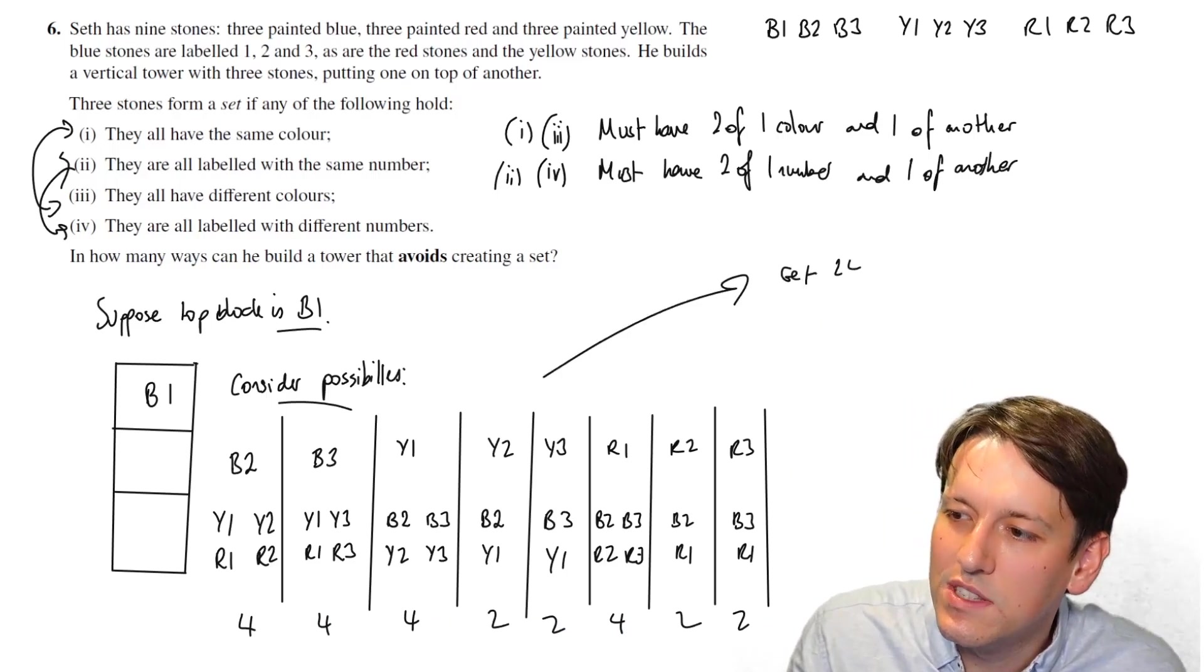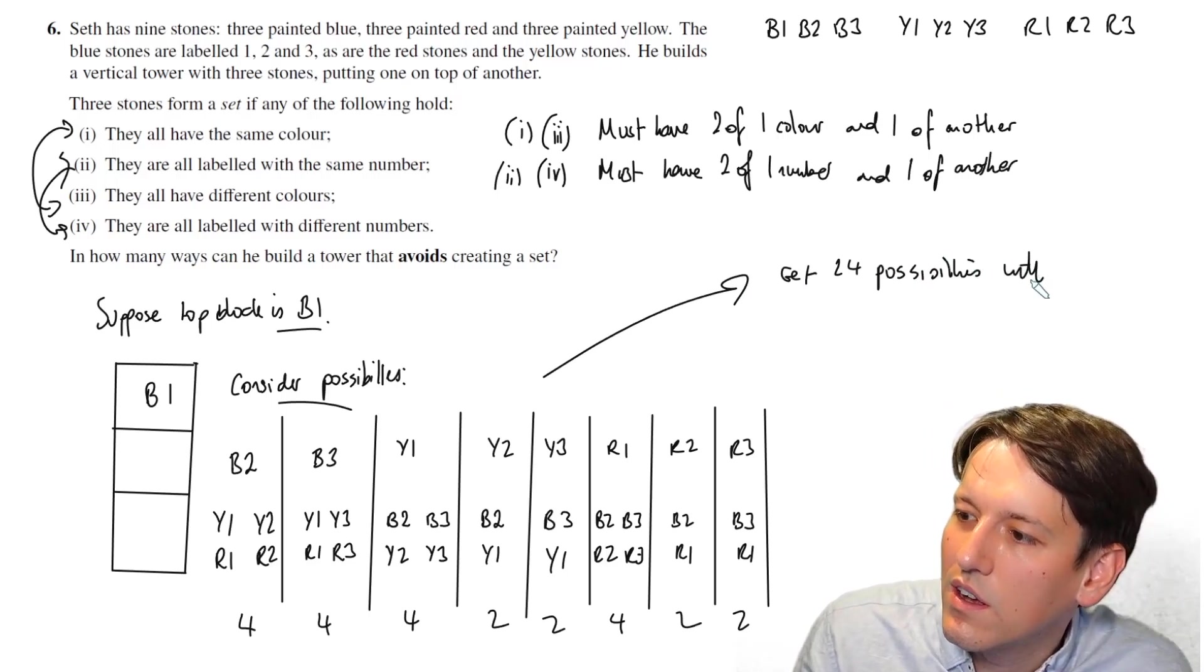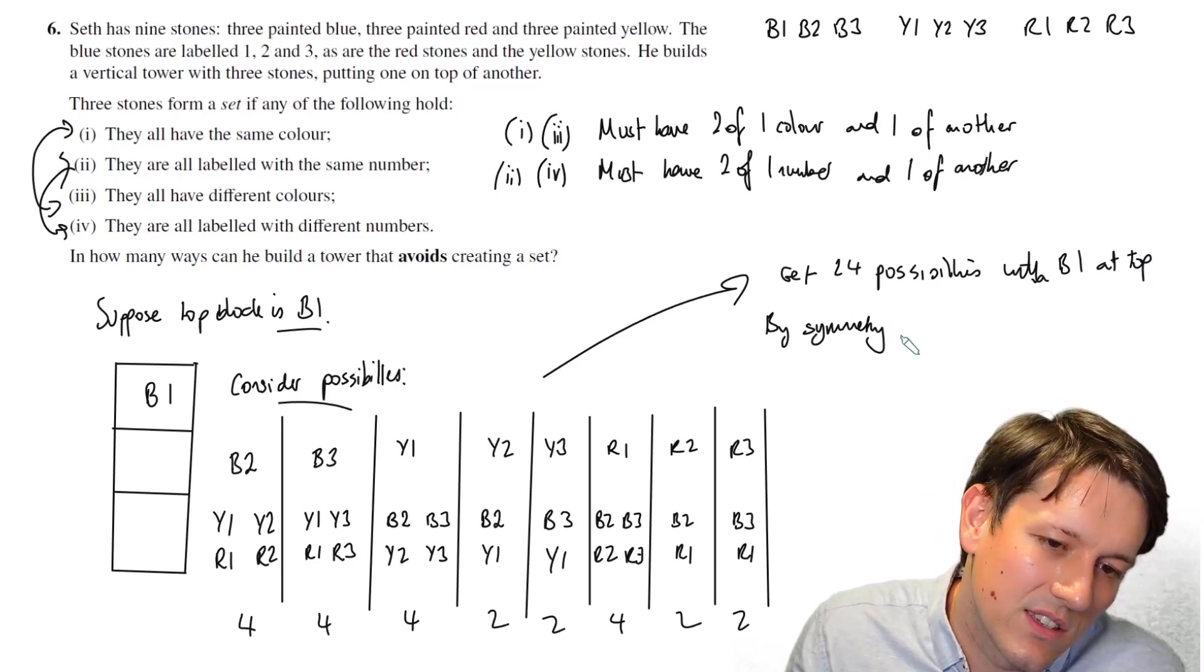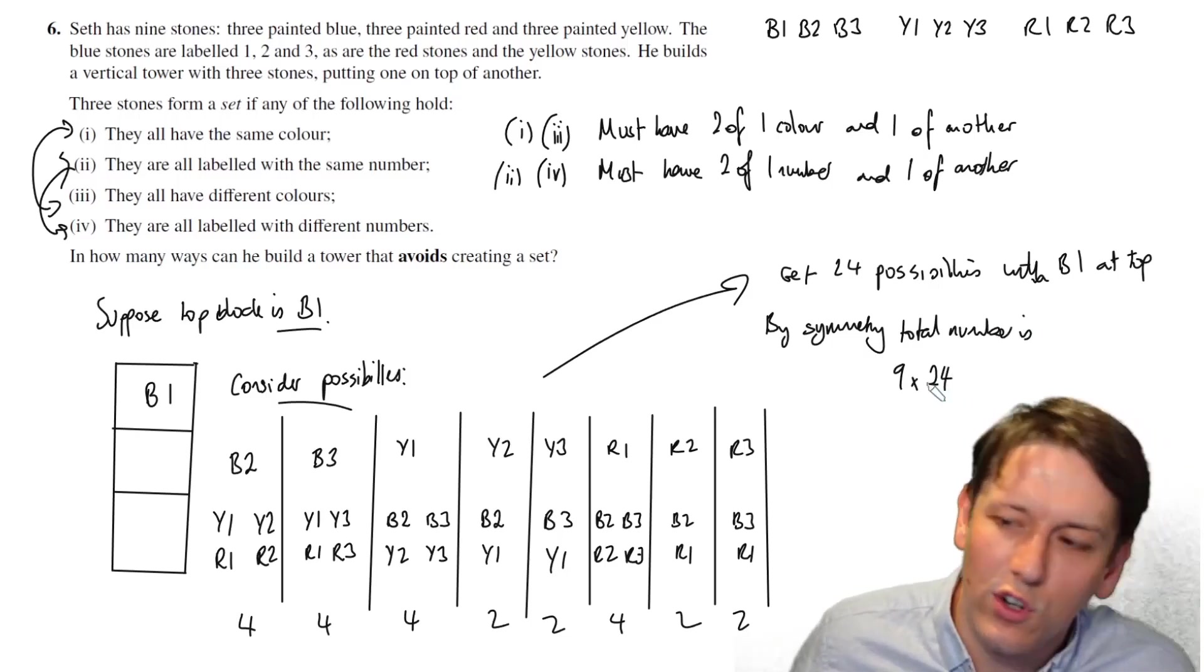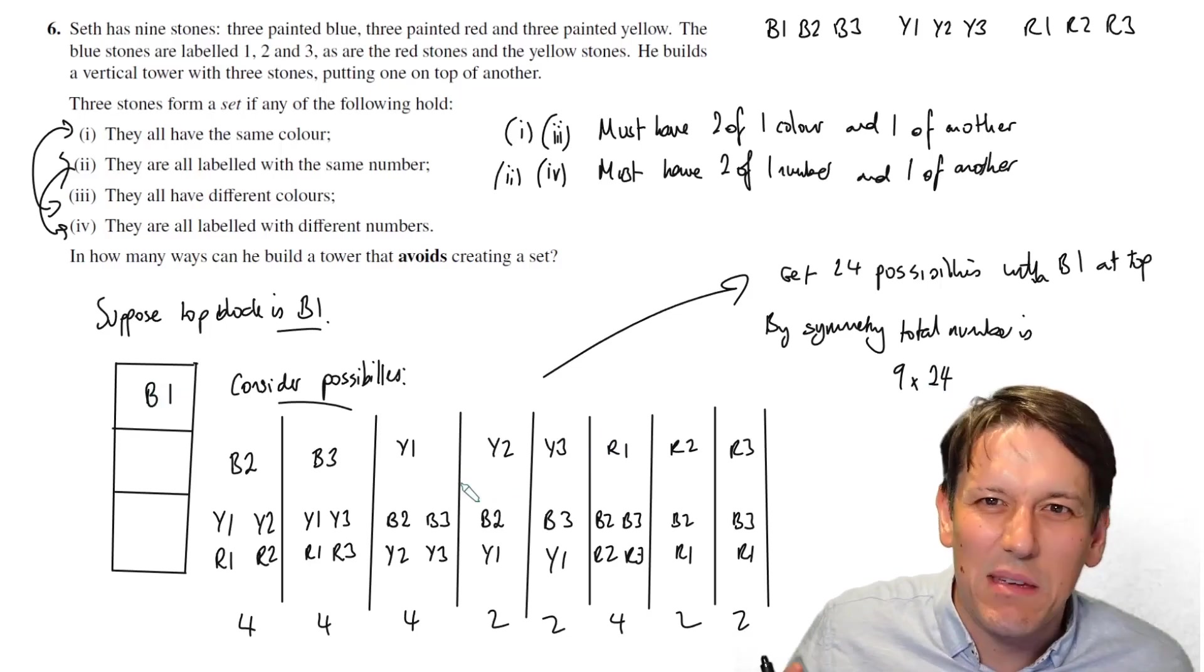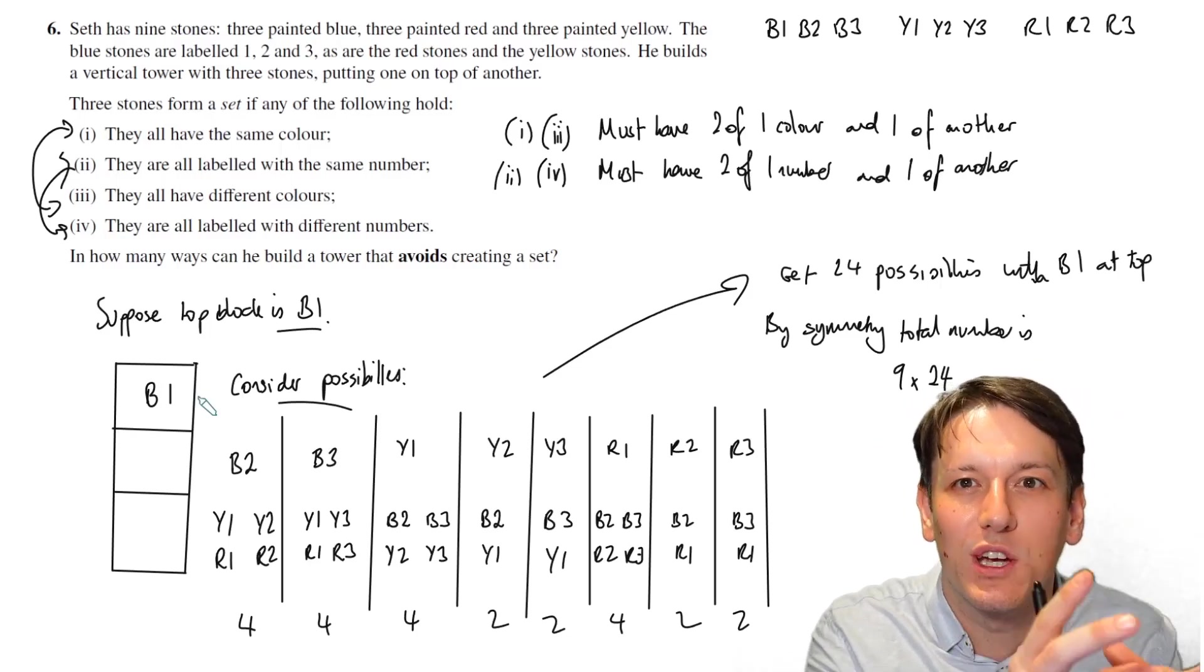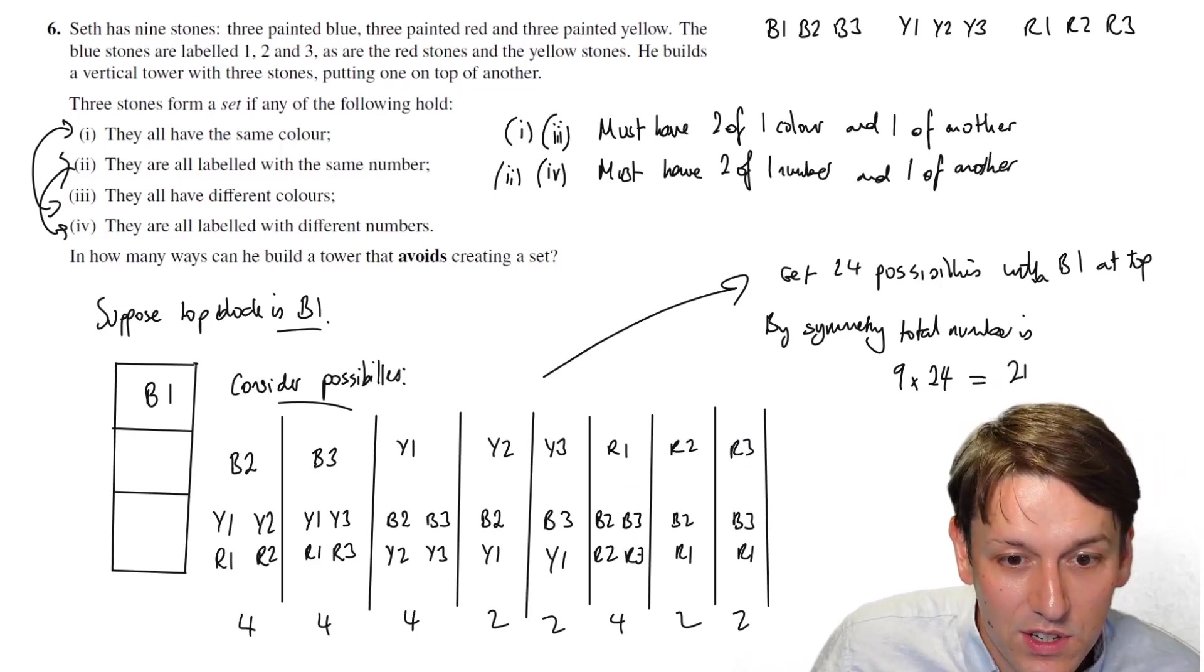So we get 24 possibilities with B1 at the top. And so by that symmetric argument that I talked about at the start, the total number is just 9 times 24, because if I put B2 here instead I can have different combinations, but it's all the same up to renumbering, recoloring. If I start with a particular one here, it's going to restrict the others in exactly the same way. There was nothing special about B1. The problem was totally symmetric in the colors and the numbers. And 9 times 24 gives us 216, 6 cubed.